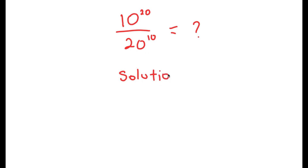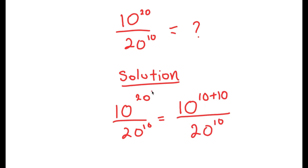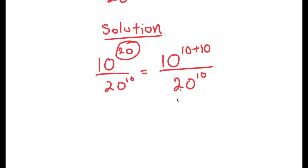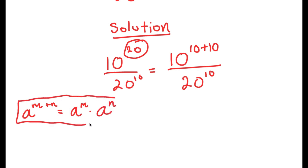For my solution, what I'm first going to do is rewrite this as 10 to the power of 10 plus 10 over 20 to the power of 10. I rewrote my exponent 20 as 10 plus 10. The reason I did that is so I can use the property a to the power of m plus n is equal to a to the power of m times a to the power of n. So this is an important property of exponents, and I'm going to use this on 10 to the power of 10 plus 10.